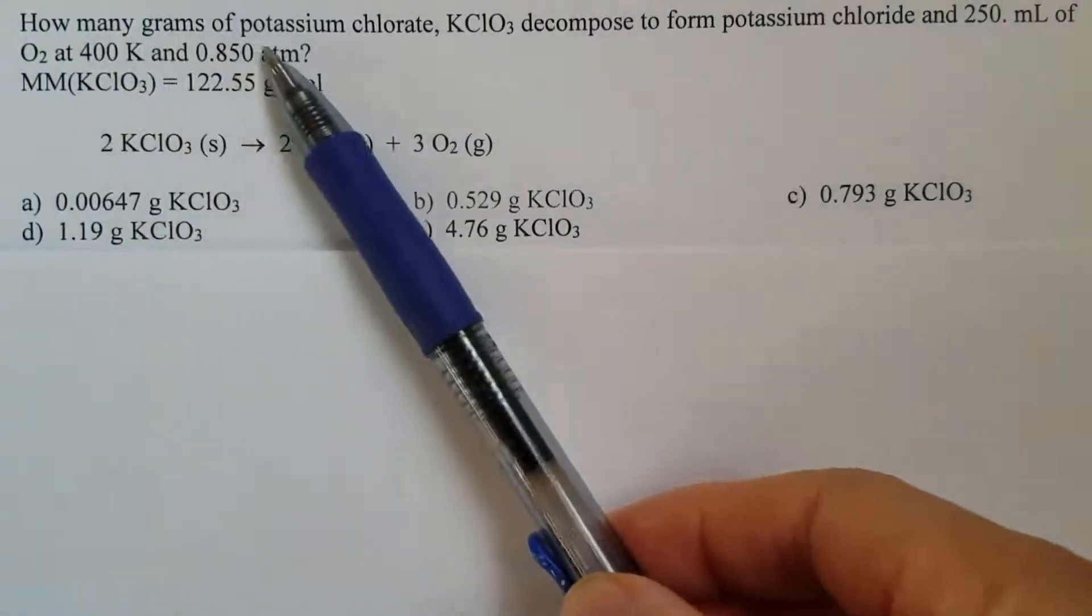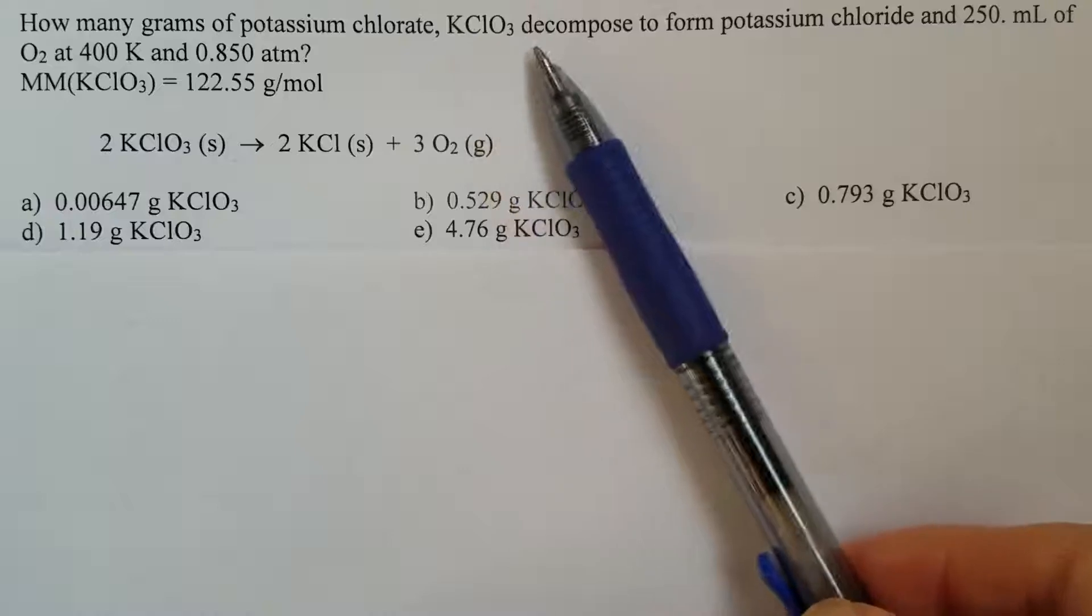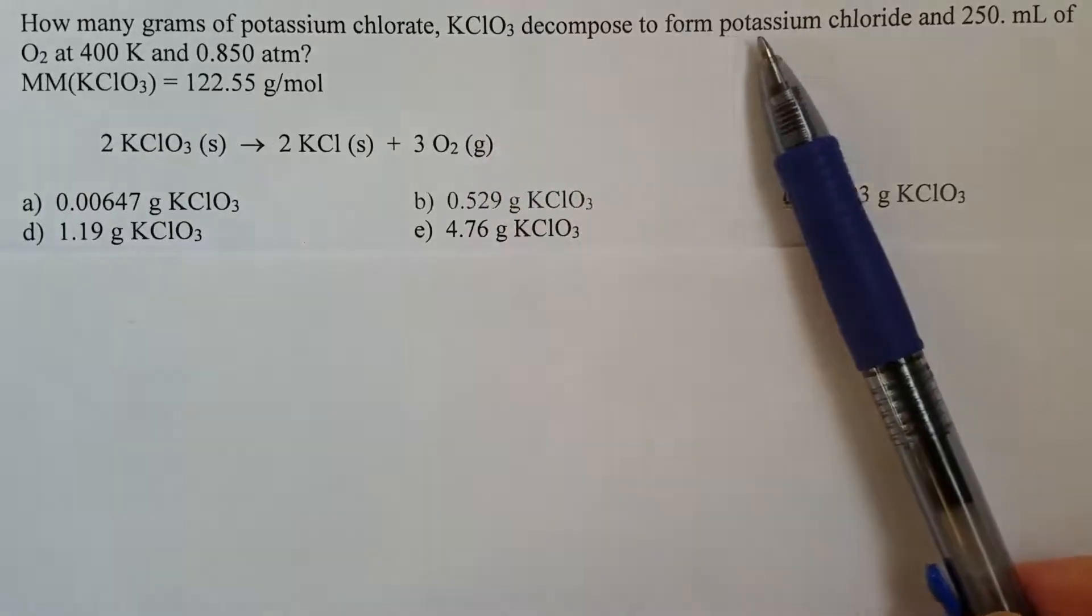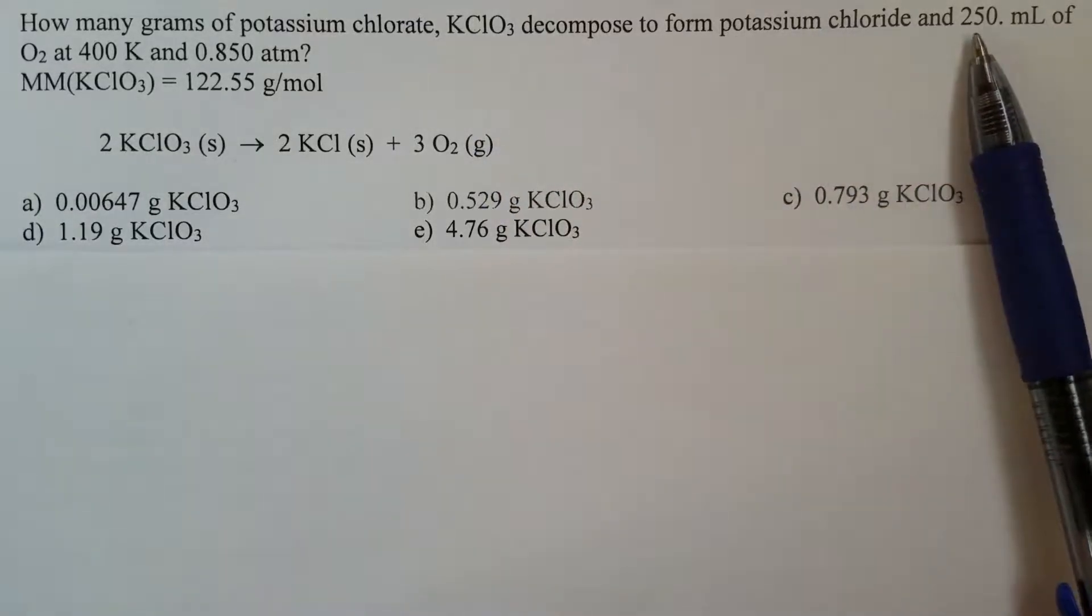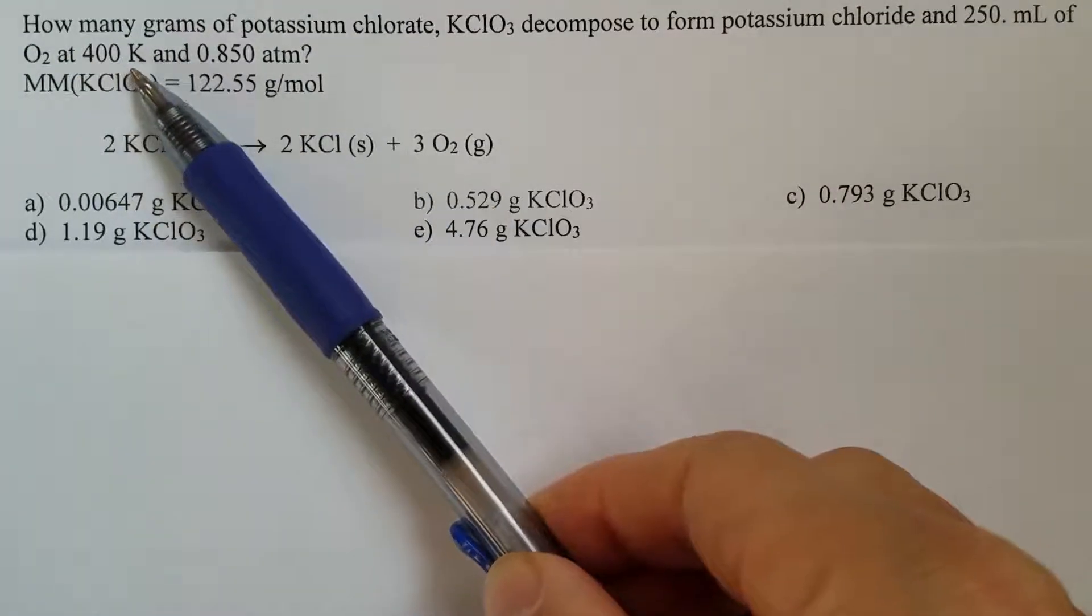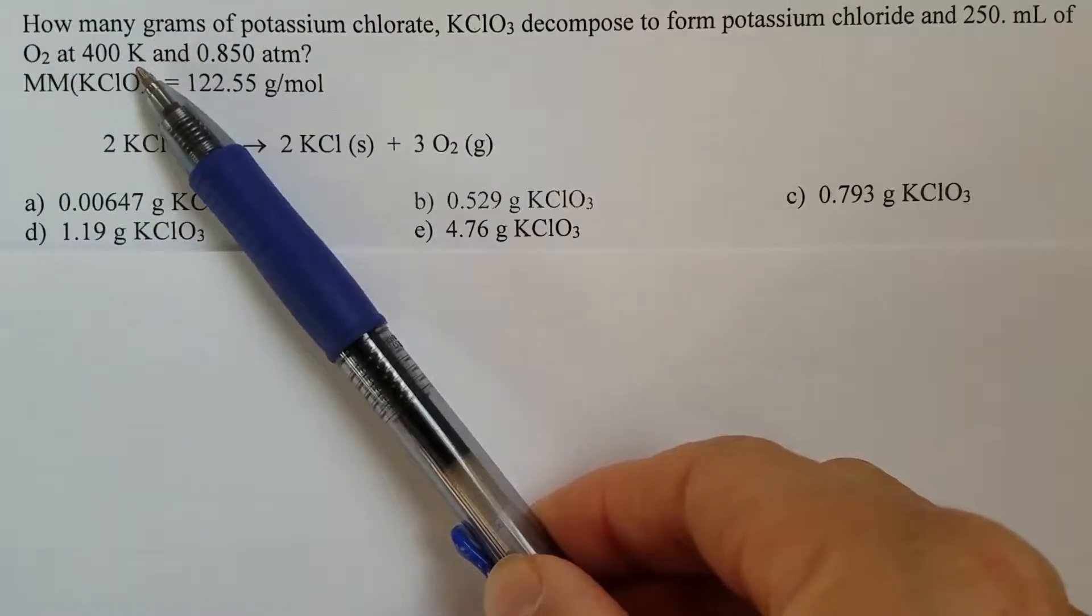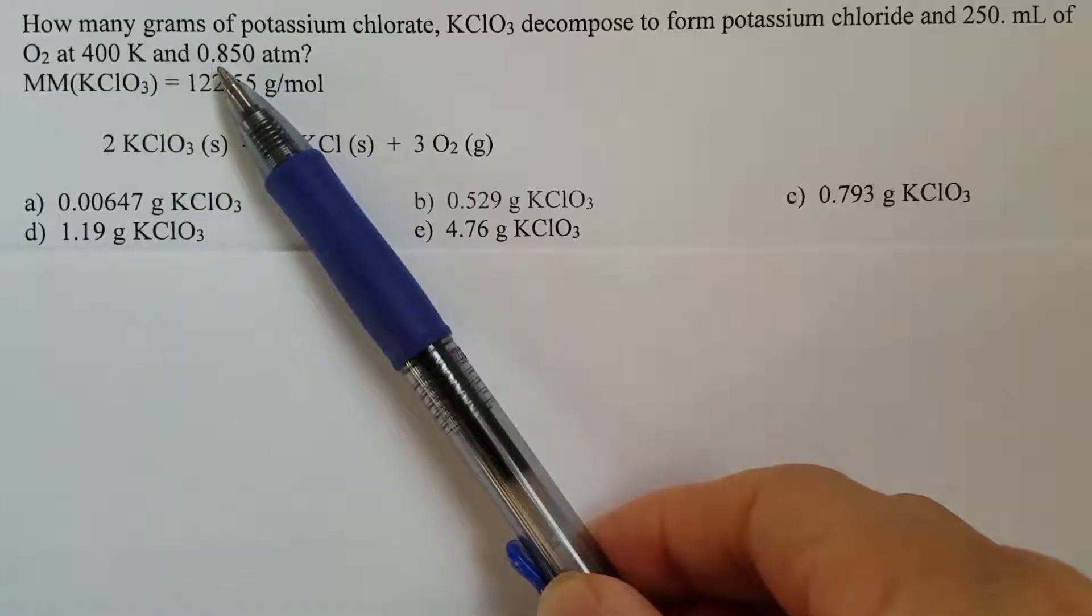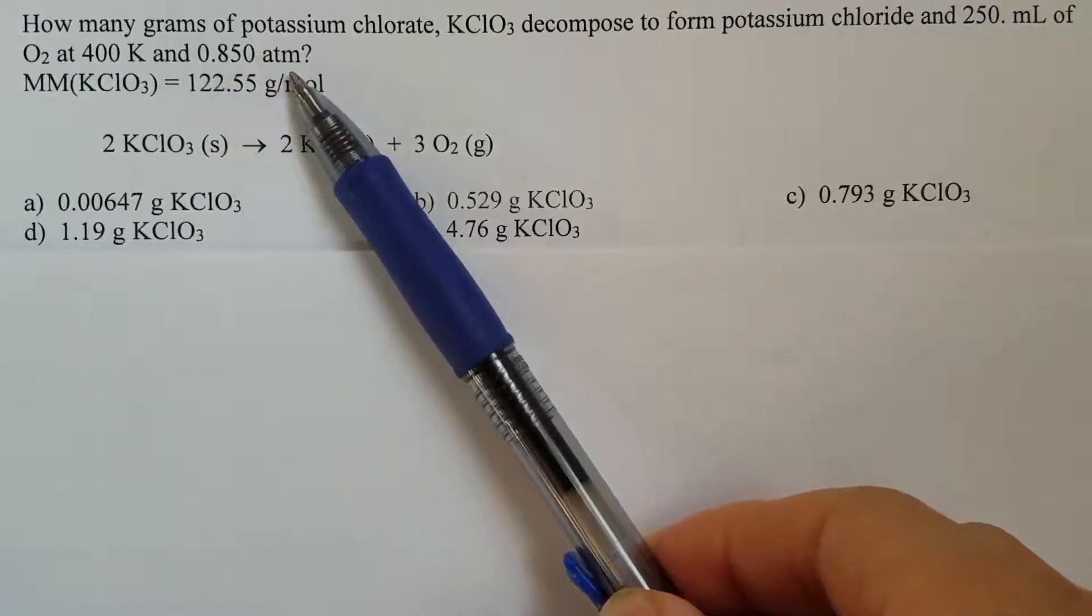How many grams of potassium chlorate decompose to form potassium chloride and 250 milliliters of oxygen at 400 Kelvin and 0.85 atm?